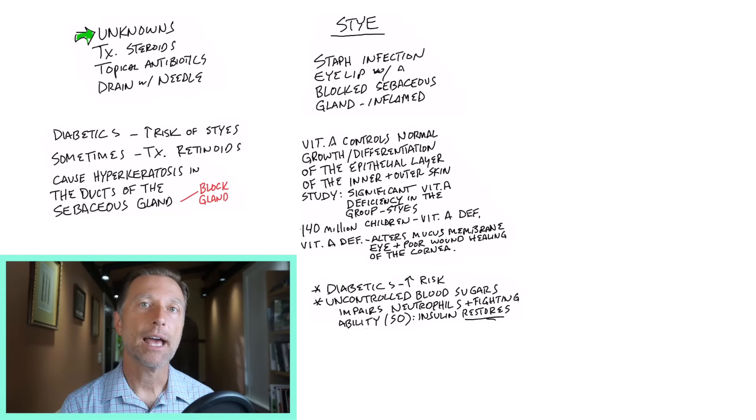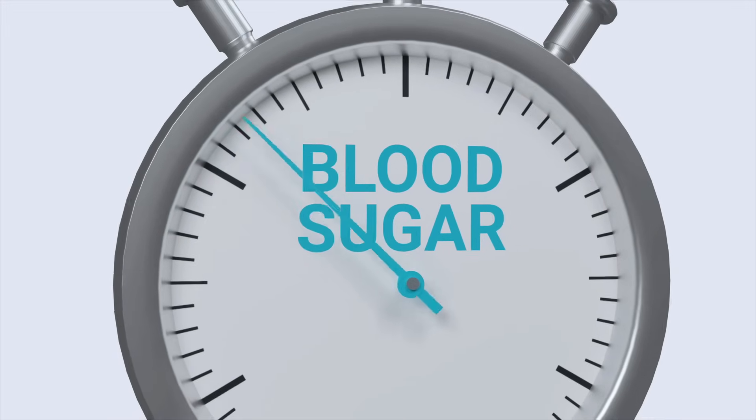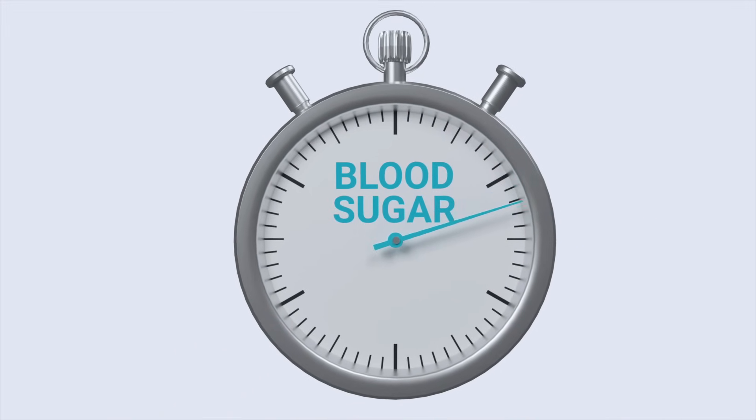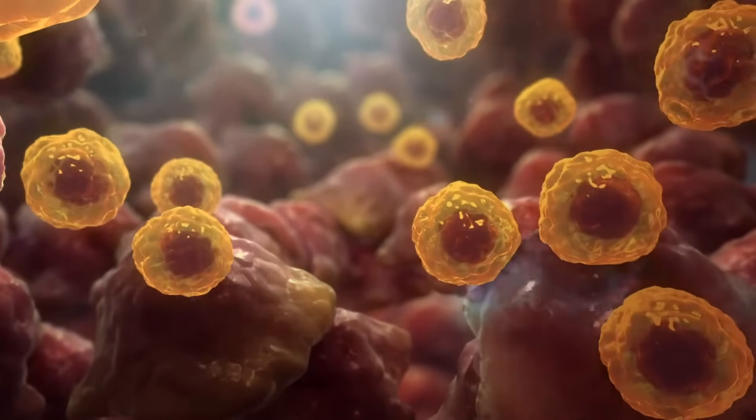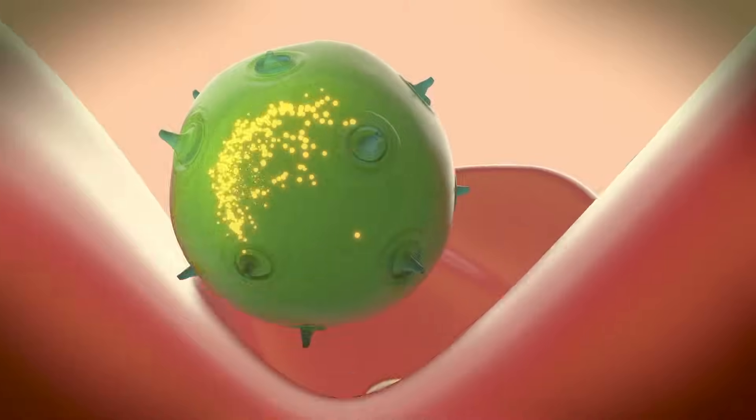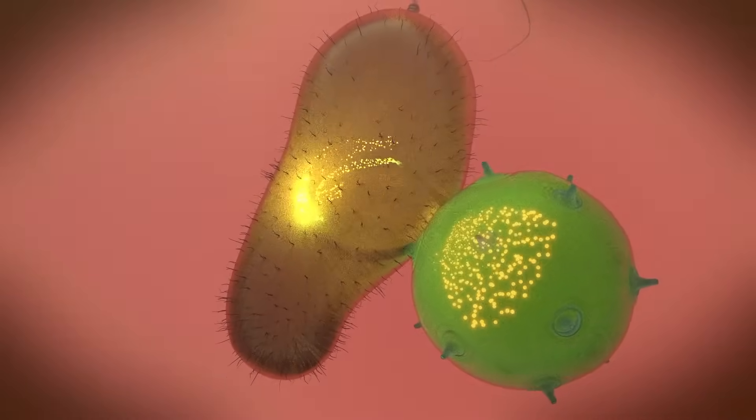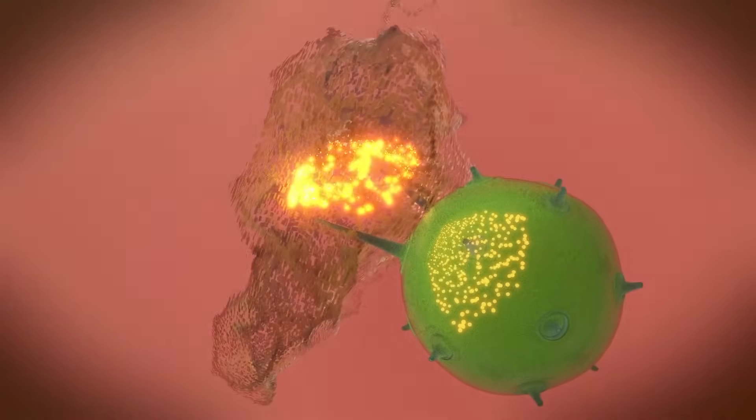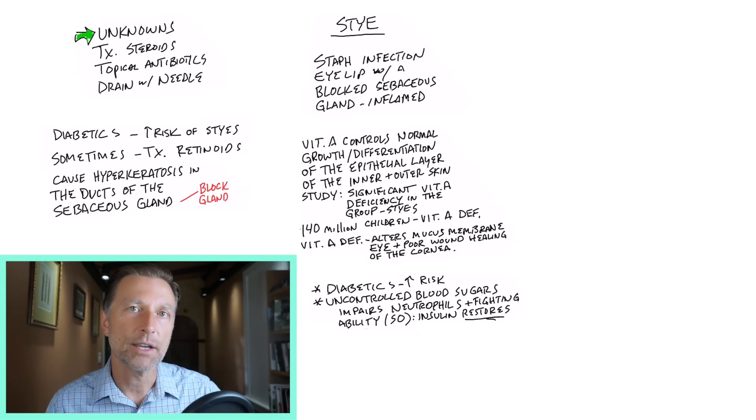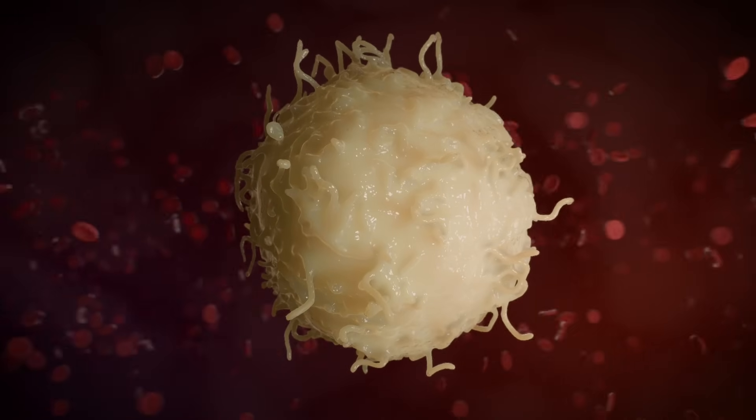Diabetics have a much greater risk of having staph infections than non-diabetics. In one study with uncontrolled blood sugars, it was found that there is a much greater impaired immune reaction with the neutrophils, that's like the frontline defense cell, in their fighting ability with something called superoxide. That's kind of like the weapon tree that they use to kill pathogens. When they injected insulin and restored the blood sugars to normal, the neutrophils and that superoxide went back to normal.